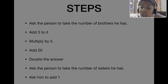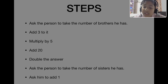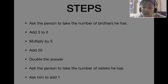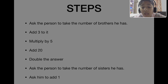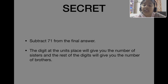Then double the answer, which gives seventy. Then ask the person to take the number of sisters — we take one — so seventy plus one equals seventy-one. Then ask them to add one more, so seventy-one plus one equals seventy-two.